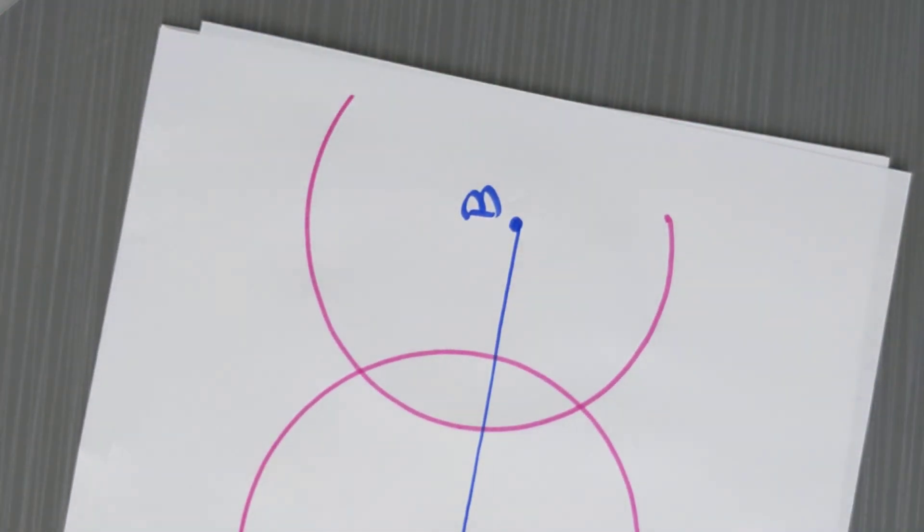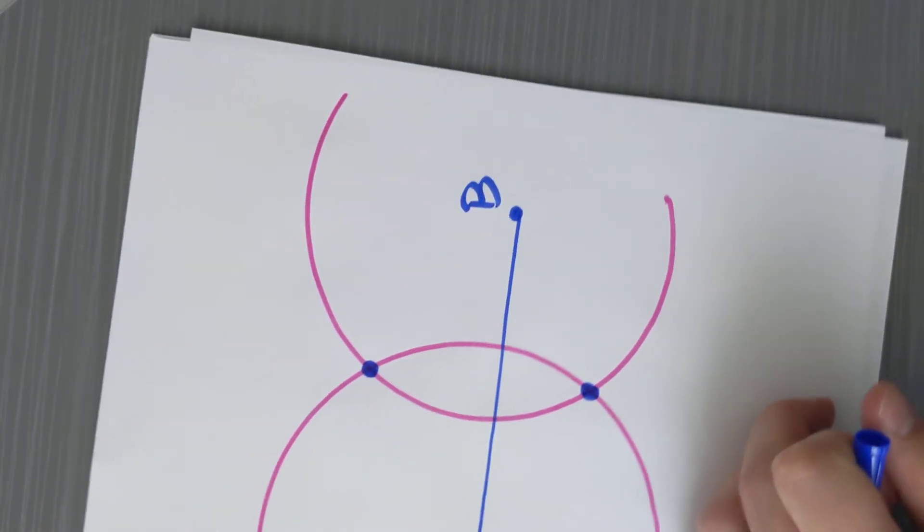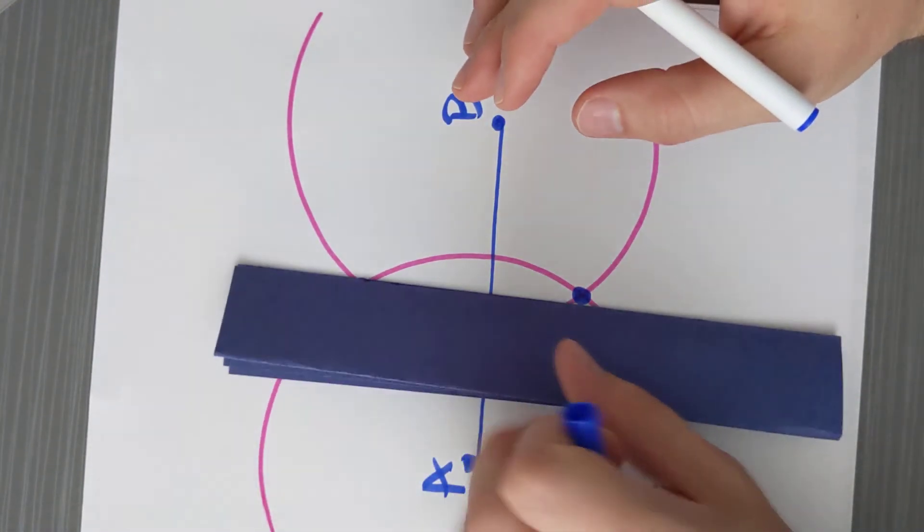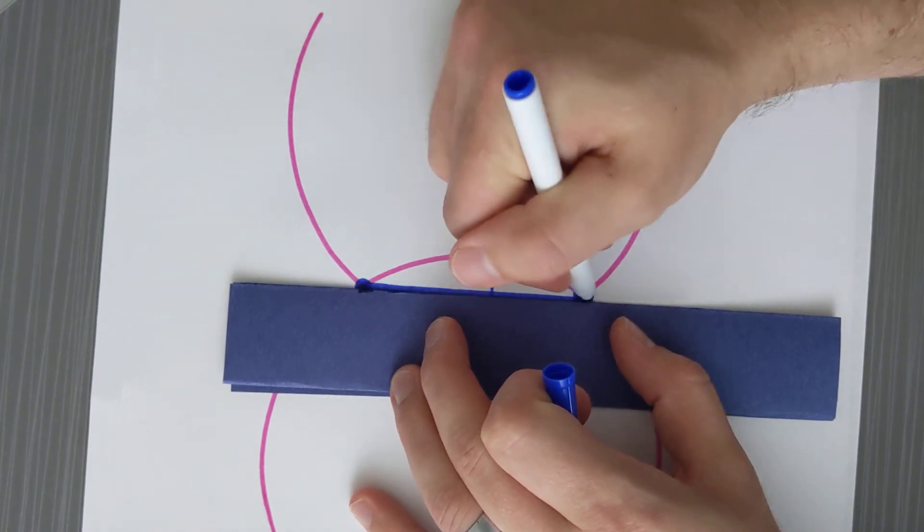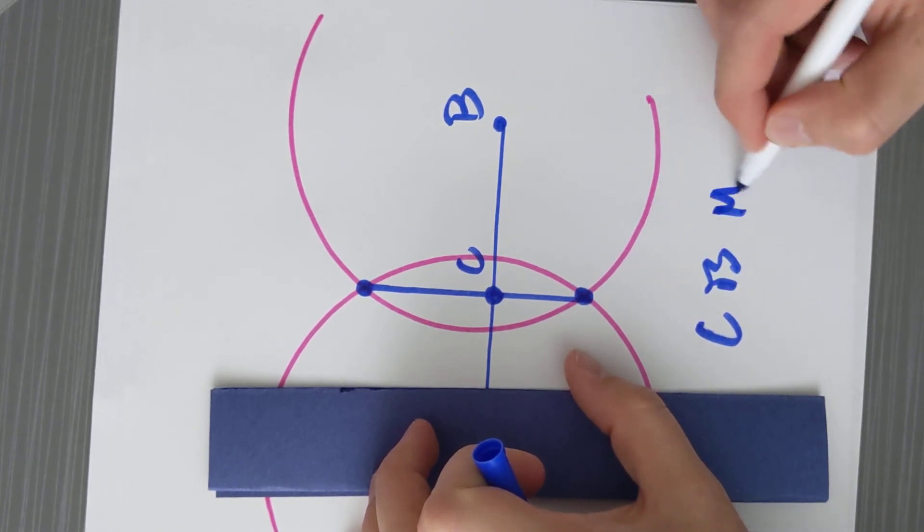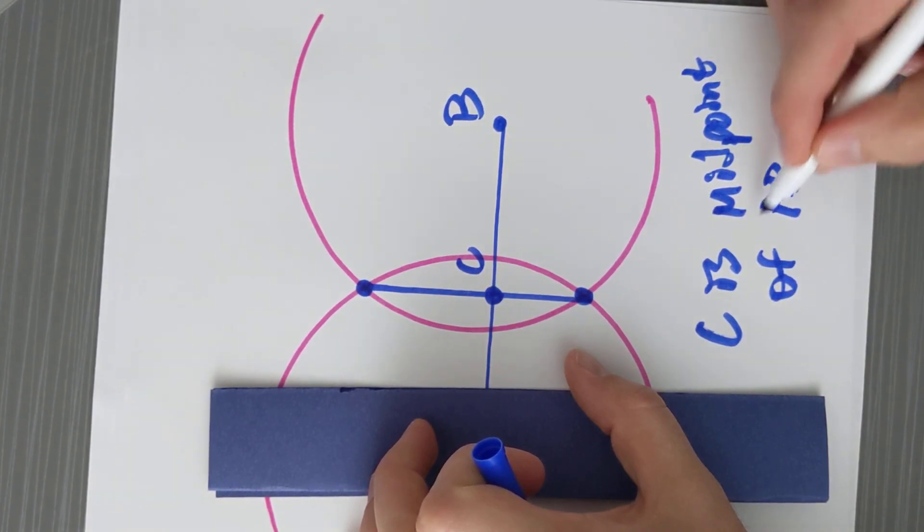Now you'll notice that my circles intersect the line in two different places. So we can't say that that's where the middle is. But if we connect these two points where the circles intersect, then point C is the midpoint of AB.